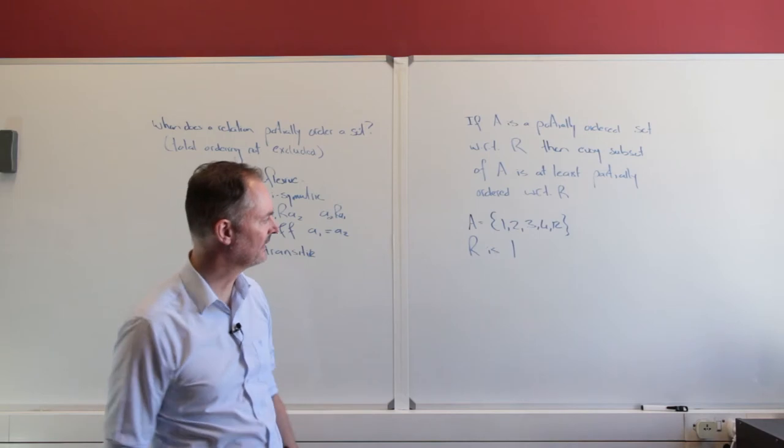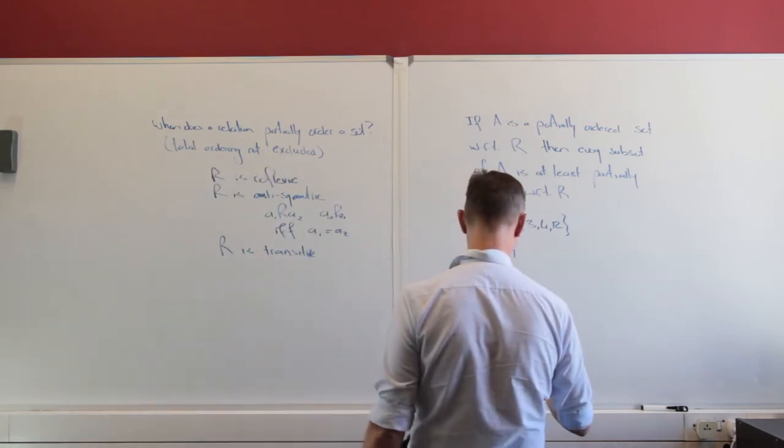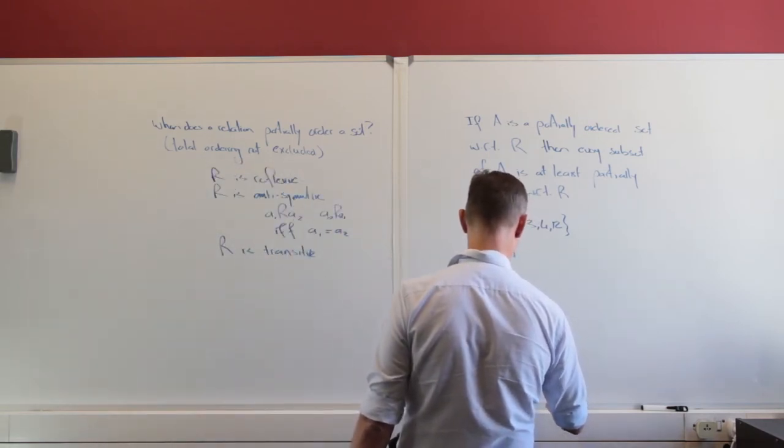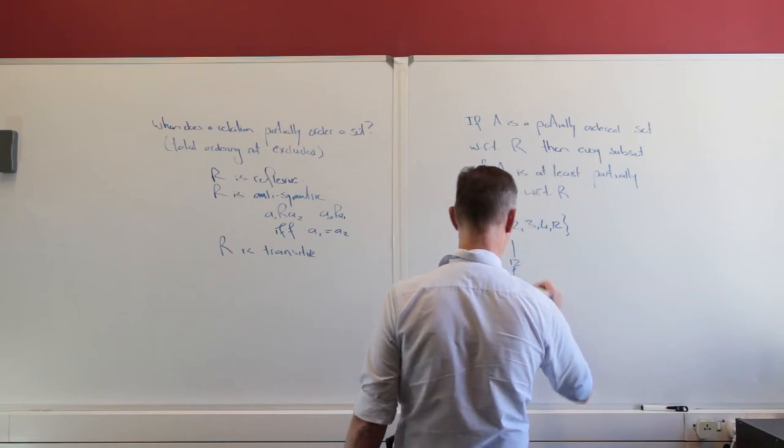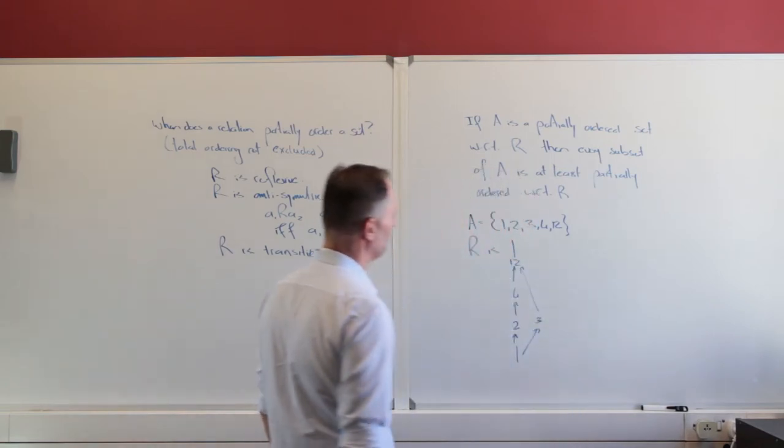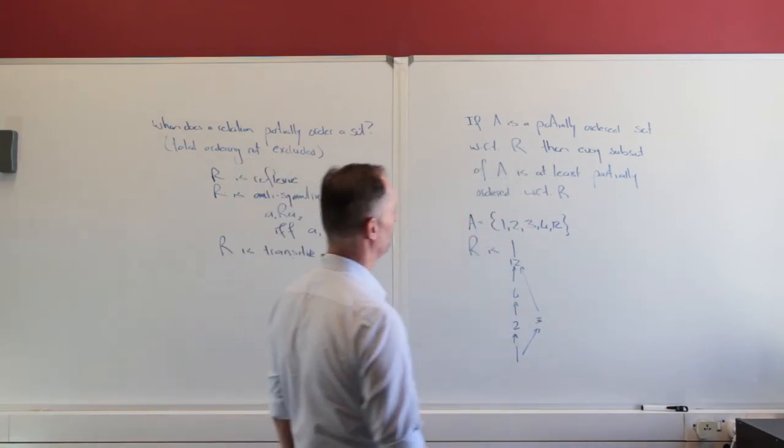and our relation was is divides. So it divides and we could write out and there's a nice way to do this: 1, 2, 4, 12 and that 3 and 3 to 12.